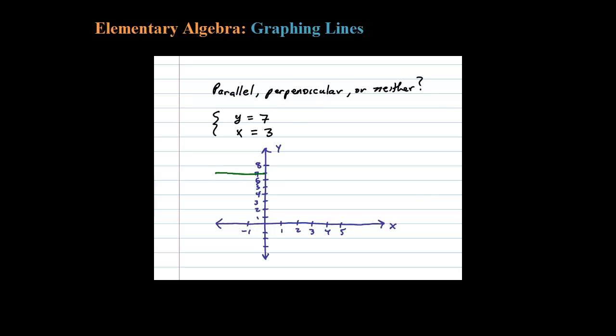All right, that's the line y equals 7. Let's look at the second line, x equals 3. We've seen that before as well. X is 3, y could be anything - that's a vertical line.